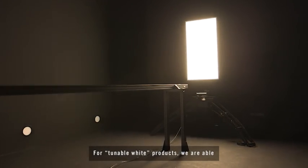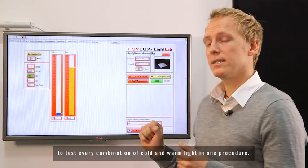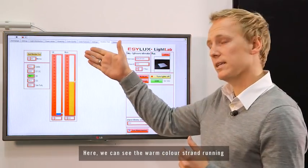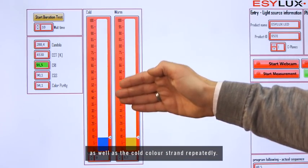Für das tunable white bedeutet das, dass wir jede Konstellation aus kaltem und warmen Licht miteinander testen können. Was wir hier sehen ist, wie der warme Farbstrang durchgefahren wird und immer wieder dann auch der kalte Farbstrang durchgefahren wird.